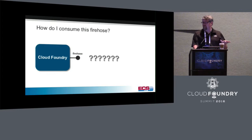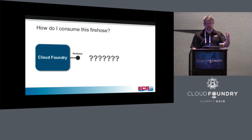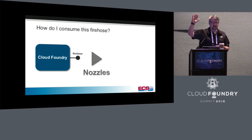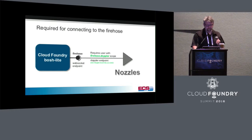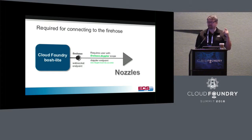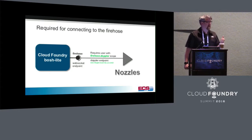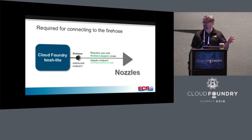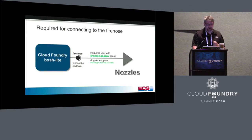So how do you consume this? You've got a WebSocket endpoint throwing a lot of information. The answer is nozzles. If you're connecting to the Firehose via a nozzle, there are two main configuration requirements. One: you need a user with privileged access — specifically the firehose.doppler scope. A lot of people hook up admin first, but you should create a separate user for anything consuming the Firehose. Two: you need the WebSocket endpoint that connects to the Traffic Controller.